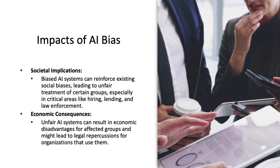Let's look at some of the impacts of AI bias. The first are societal implications. Biased AI systems can reinforce existing social biases, leading to unfair treatment of certain groups, especially in critical areas like hiring, lending, and law enforcement. The next are economic consequences. Unfair AI systems can result in economic disadvantages for affected groups and might lead to legal repercussions for organizations that use them.